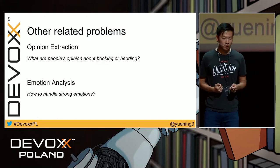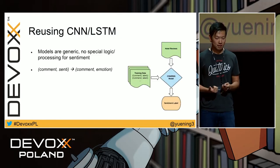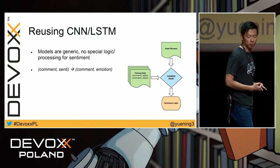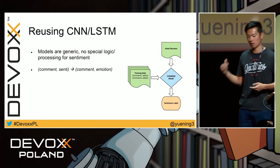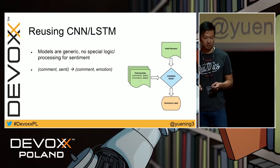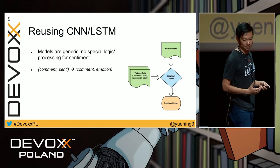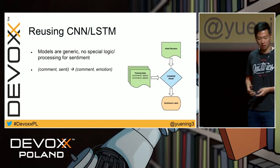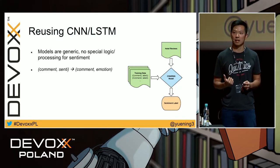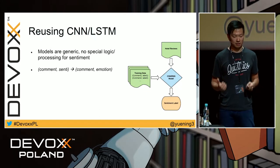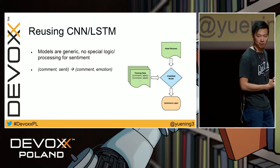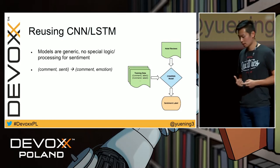For opinion extraction and emotion analysis, we won't go into the details, but they can be solved similarly with the neural networks we discussed. There's no special logic specific to sentiment in these neural networks — the training data is just comments and a label. If we collect good quality training data for comment-emotion pairs, the same architecture can solve other similar classification problems.